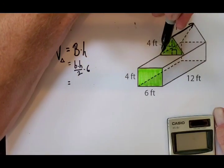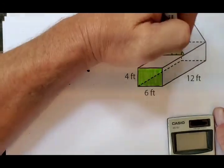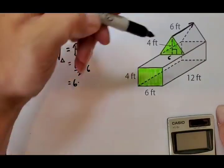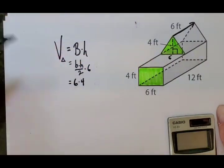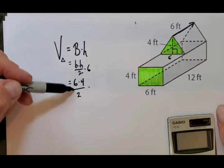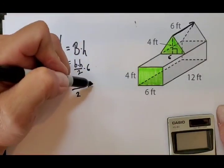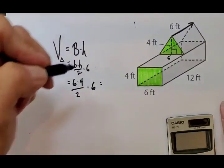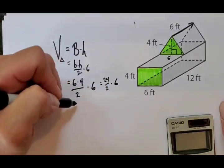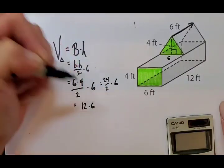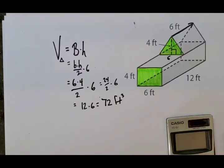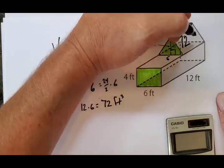Looking at the triangle, the base of the triangle is six, the height of the triangle is four, divided by two. That's the area of the triangle, times how far back it goes, which is six feet. So I calculate this: 24 over two times six, which is 12 times six, which is 72. So the volume of the triangular prism portion is 72 cubic feet.